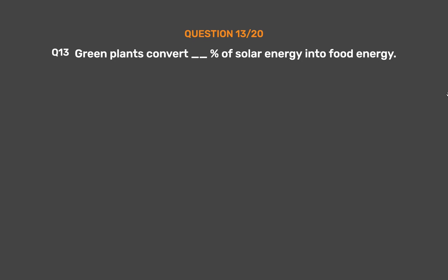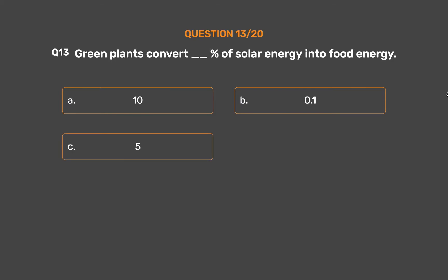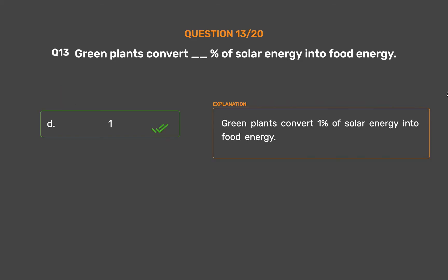Question number 13: Green plants convert what percent of solar energy into food energy? Option A: 10, Option B: 0.1, Option C: 5, Option D: 1. The correct answer is Option D, 1. Green plants convert one percent of solar energy into food energy.